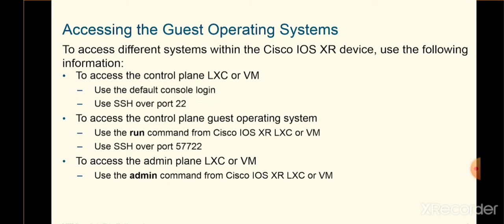We've seen that there are quite a few different operating systems or portions of the router when running IOS XR 64-bit. So how do we get into these different components? To access the control plane — to run show commands or look at BGP or OSPF routing — we use a standard console or SSH/Telnet over standard ports, in this case SSH port 22. If we want to look at the underlying OS the control plane runs on, from within the control plane we can issue the run command, which drops us down into the Linux guest operating system.